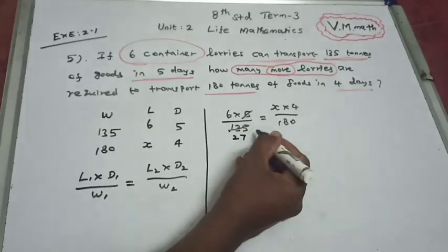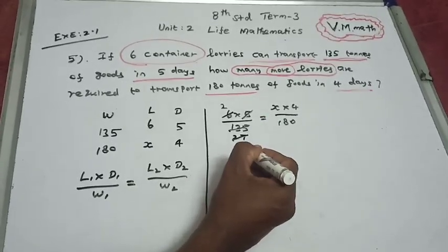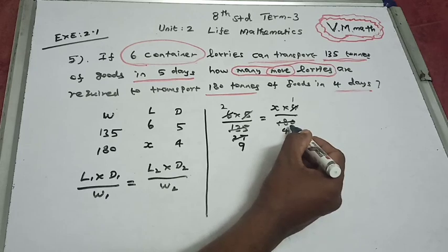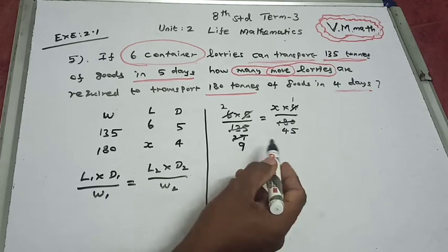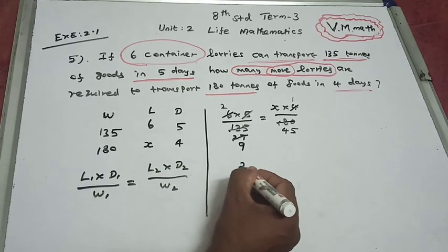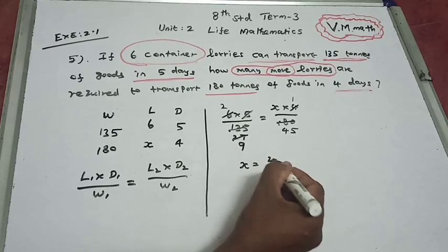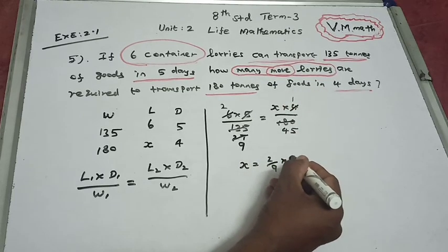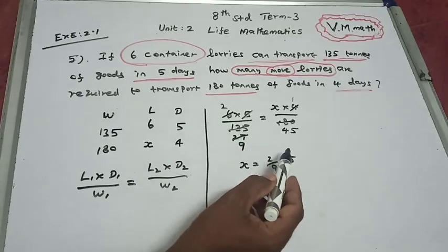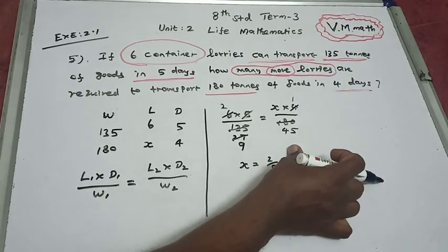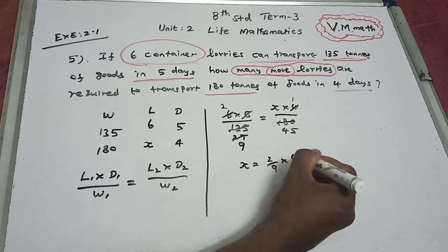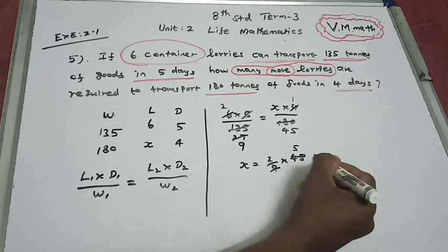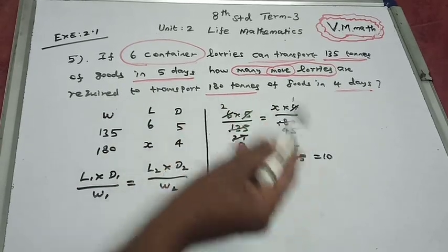Simplifying the fractions — cross-multiplying and cancelling common factors — we get x equal to 2 by 9 times 1 by 5. Working through: 5 twos are 10, so x equals 10 lorries.